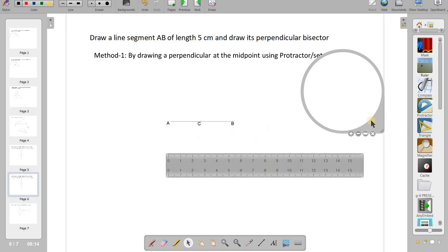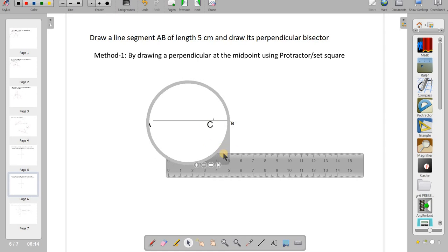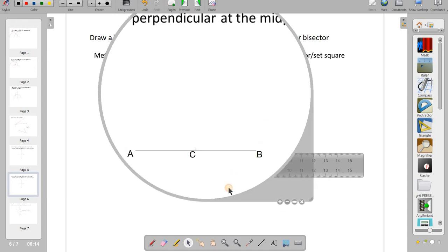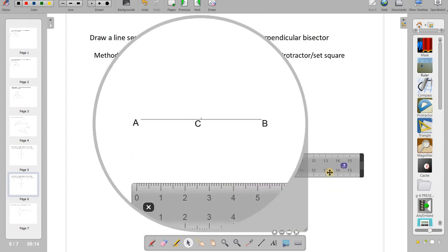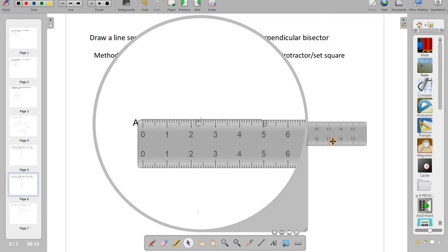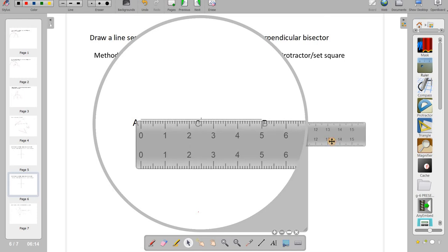So, I have marked the midpoint C also here. This is the midpoint C. I'll show it. Midpoint should be at 2.5 cm. You can see it here. Midpoint should be 2.5 cm. Half of 5 is 2.5.